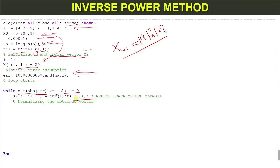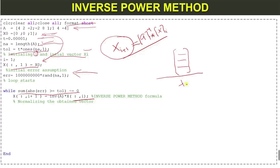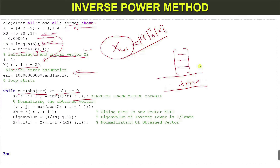After computing the new vector, we normalize it. To normalize, we first find the absolute maximum value in that vector. We use MATLAB's max function with the abs command — this gives us both the maximum value and its position in the vector. Then we divide the column vector by this absolute maximum value.